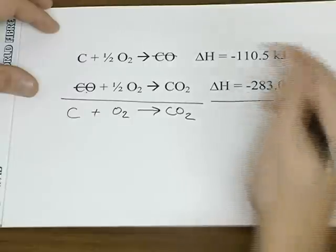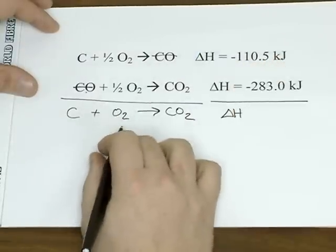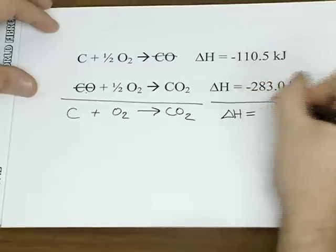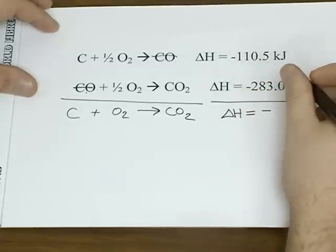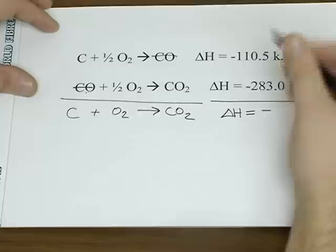What Hess's Law says is that when you add two equations together like we did here, the enthalpy change for that reaction is the sum of the enthalpy change for the equations that were added together.